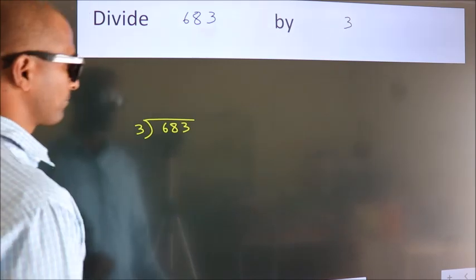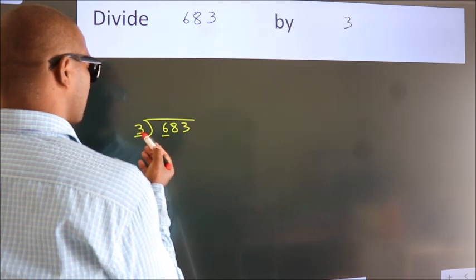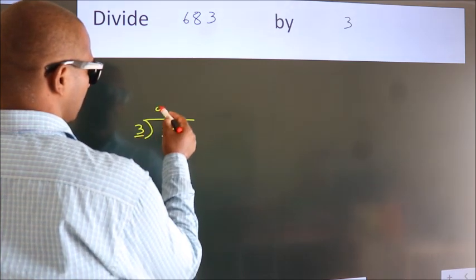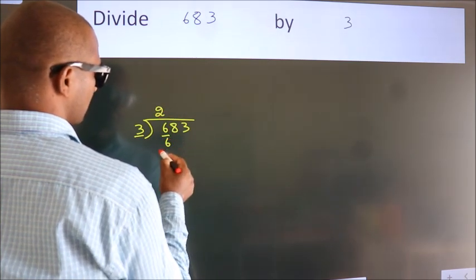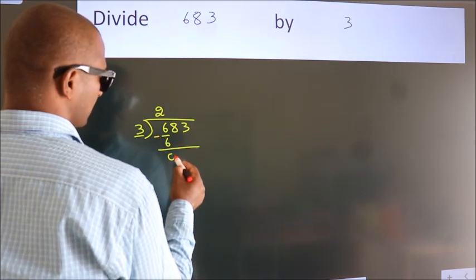Next, here we have 6, here 3. When do we get 6? In 3 table, 3 2s, 6. Now, we should subtract, we get 0.